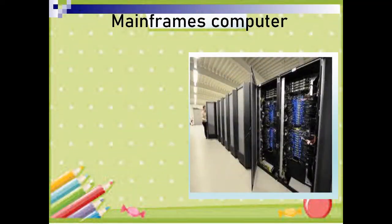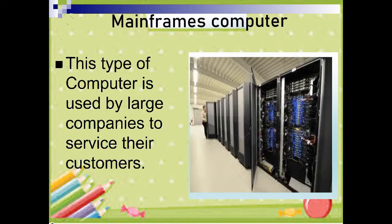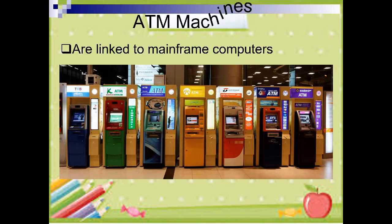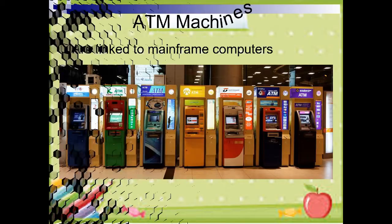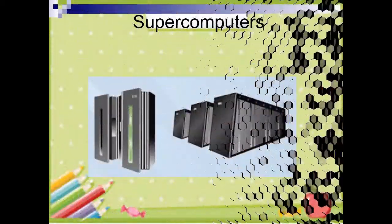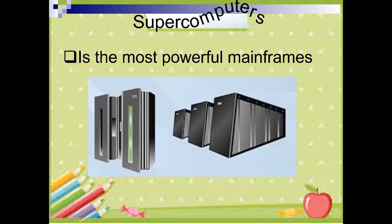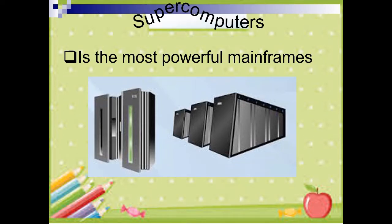Next is a mainframe computer. This type of computer is used by large companies to service their customers. ATM machines in the country are linked to their bank's powerful mainframe computers. This computer stores data about every customer. The most powerful mainframes are called supercomputers. Supercomputers are the largest, fastest, and most expensive type of mainframe computers.